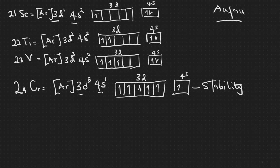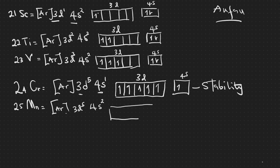The 25th element, manganese, is [Ar] 3d⁵ 4s². In its orbital diagram, 3d has five boxes each with one electron (half-filled), and 4s has two electrons. Manganese follows the normal configuration and does not show an exception.